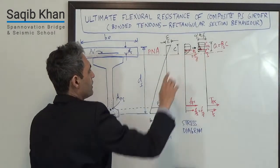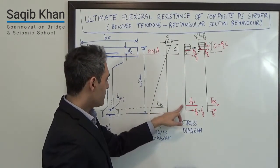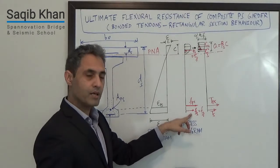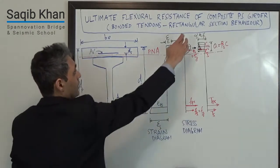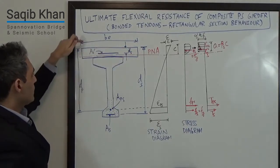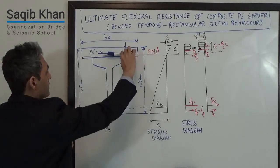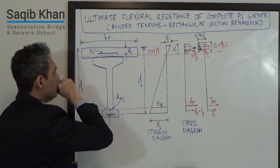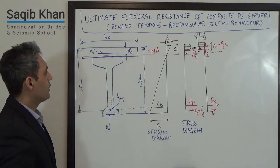Then we have the stress in the rebar at the top — we're assuming that rebar is yielding. We have the stress in the strands, shown as FPS, and the stress in the rebar at the bottom, which is FS — again, we're assuming it is yielding. Because we're talking about rectangular section behavior, the assumption is that the plastic neutral axis is within the deck. If the neutral axis is within the flange it could be T-section behavior, or in the web, which is quite unlikely. T-section behavior is a topic for another time.